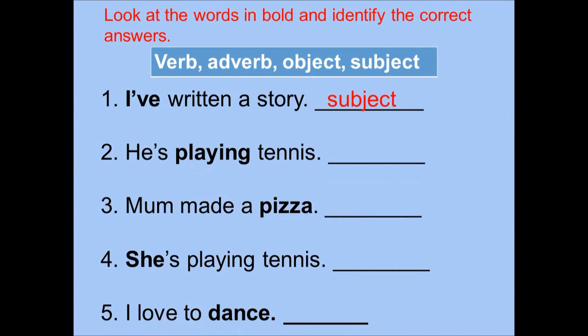Number two: He's playing tennis. The bold word is playing. What is playing in the sentence? The correct answer is verb. Number three: Mom made a pizza. The bold word is pizza. What is pizza in the sentence? The correct answer is object.